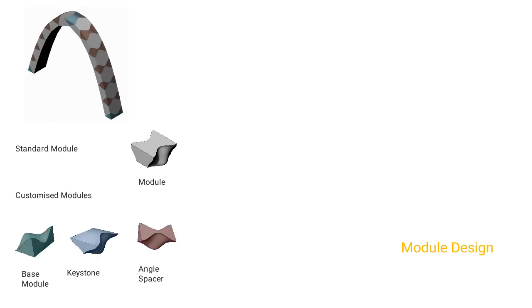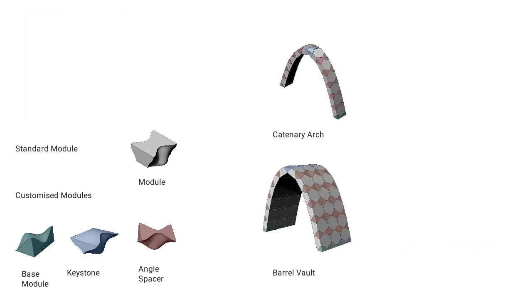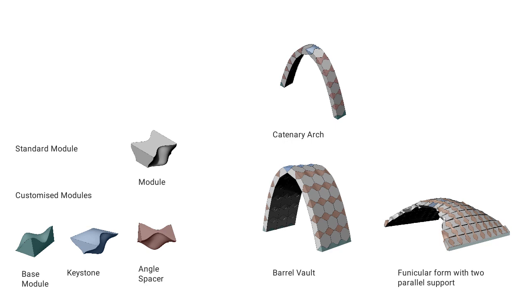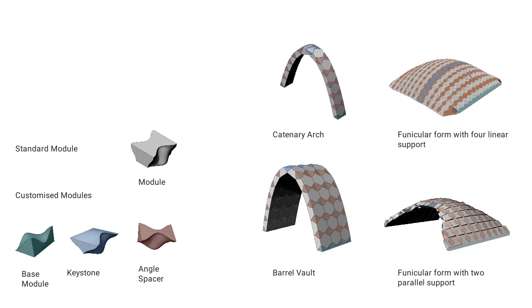To cater to the required curvature of the forms, the assembly pattern introduces special modules responding to a range of angles called angle spacers. In order to limit customization, the assembly consists of alternate standard and customized modules. The base module, the keystone, and the angle spacers require customization depending upon the curvature. The modules were assembled into a simple catenary arch, a funicular barrel vault, a funicular vault with two parallel supports, and a funicular vault with four linear supports.